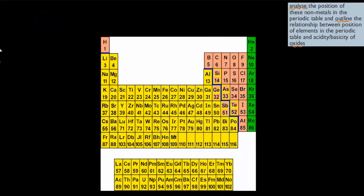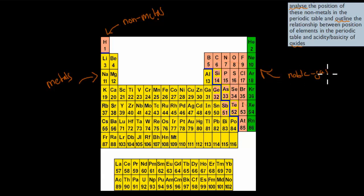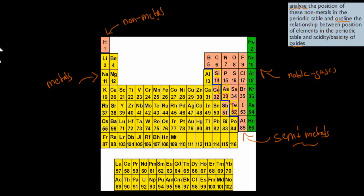First, I'll go over the periodic table again. In the periodic table, the yellow ones are our metals. We have our non-metals, which are in red — we've got hydrogen here and quite a few more on the right-hand side. The green ones are our noble gases. And then in between — the ones that have a bit of yellow and a bit of red — these are our semi-metals. They act a bit like metals and a bit like non-metals.